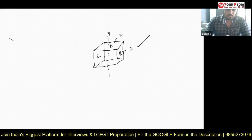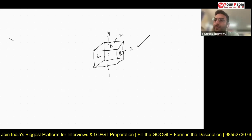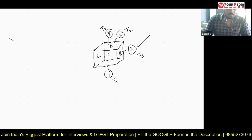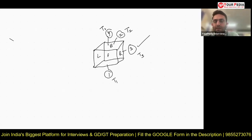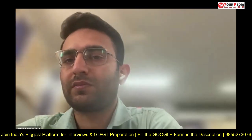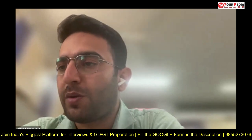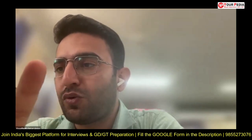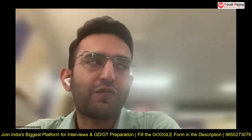If all of these surfaces are maintained at different temperatures — surface one at T1, surface two at T2, surface three at T3, and surface four at T4 — show me what the network diagram will look like for radiation heat transfer. Bottom as one, top as two, left and right as three, front and back as four.